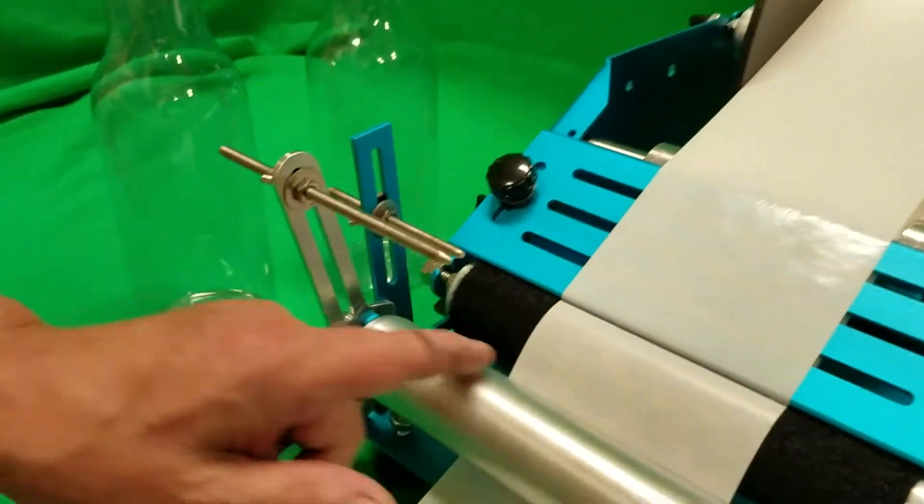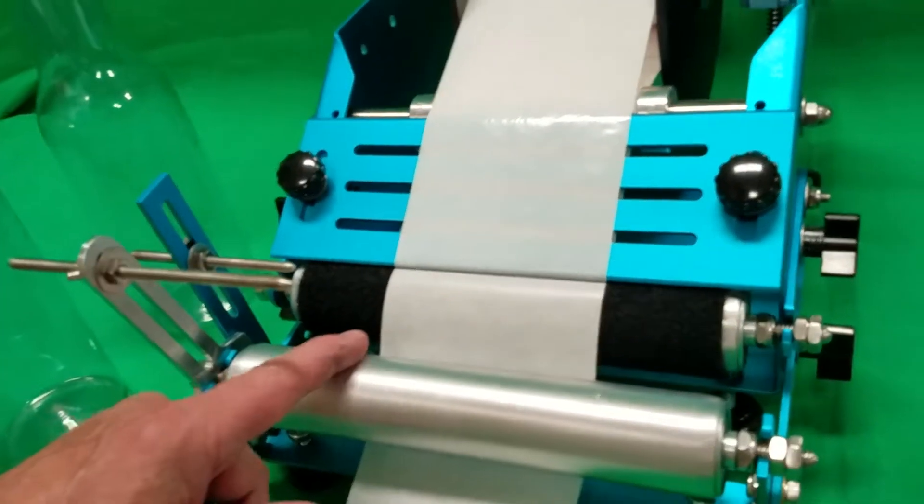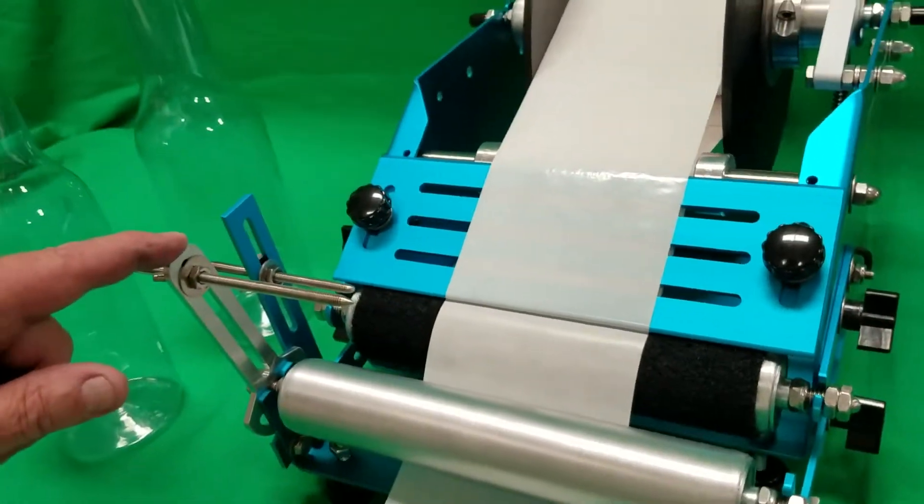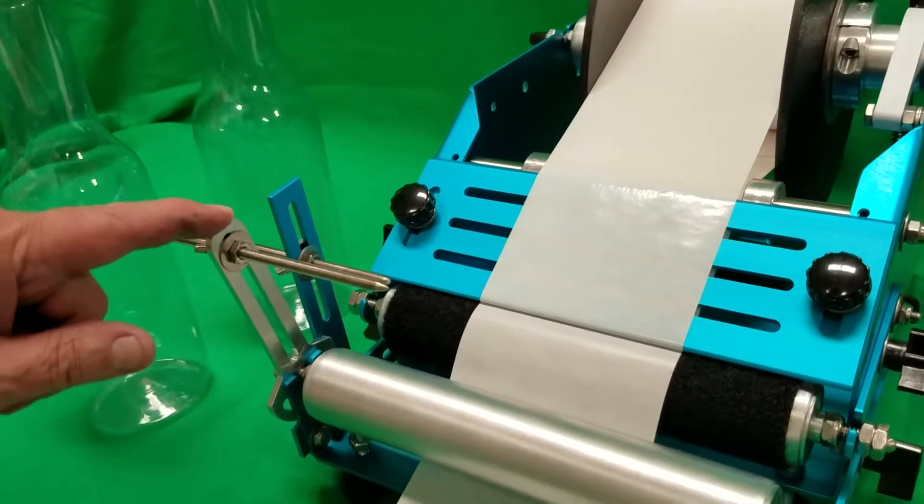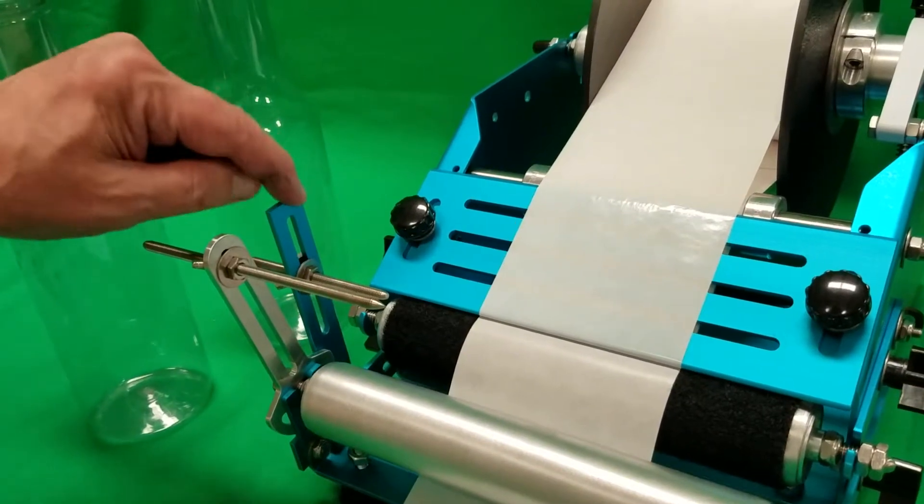So here you have the cradle area. This is where the bottle sits. This pointer right here, this indicator, is called the Gap Guide. And this one right here is your bottle stop.